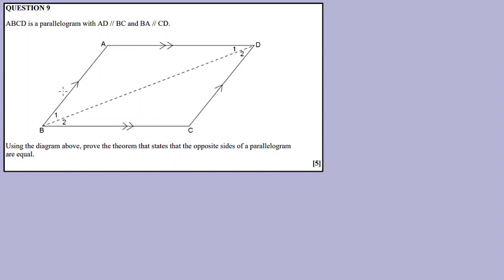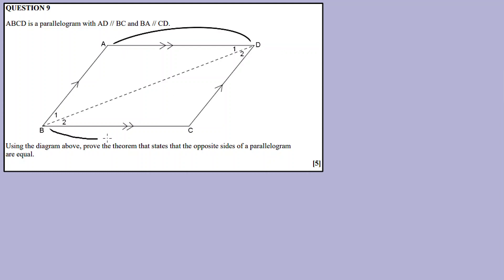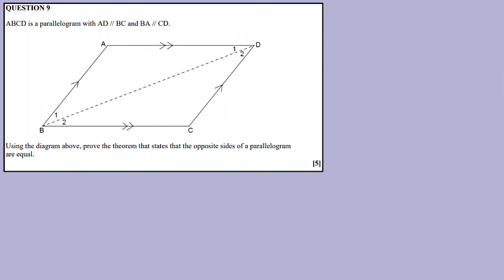As well as subscribing to the channel. So, ABCD is a parallelogram with AD parallel to BC, and BA parallel to CD. Basically, it's a parallelogram. Anyone would know this is a parallelogram. There's nothing complicated, there's nothing difficult.